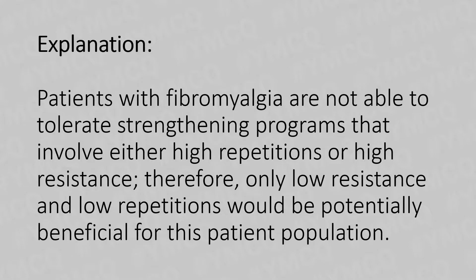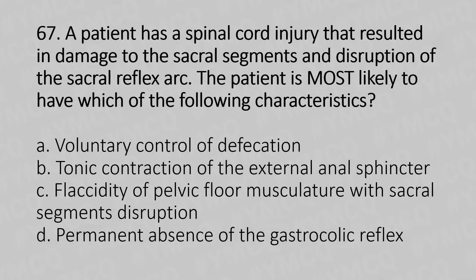Now let's move to our 67th question. A patient has a spinal cord injury that resulted in damage to the sacral segment and disruption of the sacral reflex arc. The patient is most likely to have which of the following characteristics? Option A: voluntary control of defecation. Option B: tonic contraction of the external anal sphincter. Option C: flaccidity of pelvic floor musculature with sacral segment disruption. Option D: permanent absence of gastrocolic reflex.